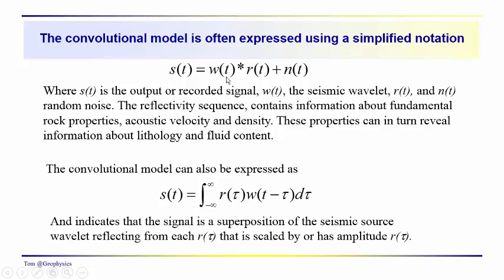We have components in the convolution that consist of the wavelet convolved with the reflectivity sequence, and then we always have some noise, which is usually considered to be random noise. The seismic wavelet could be Vibroseis, Dynamite, Airgun, Mini-Sosie, Shotgun, or some kind of seismic source.